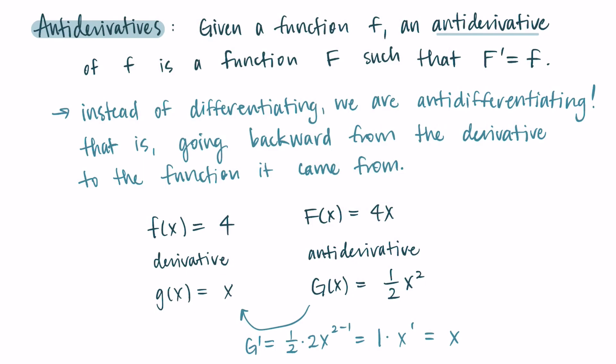One more comment before we move on. What I have is just an antiderivative for these functions, but if we add a constant onto the end, when we take its derivative, the derivative of a constant is 0, so it goes away, and we'd still be left with f of x equals 4. We could add 10, add 500, or subtract 3 eighths — it still goes away. So we write a plus c at the end of our antiderivative to represent that there could be a constant there.